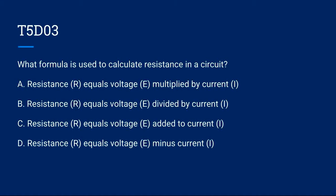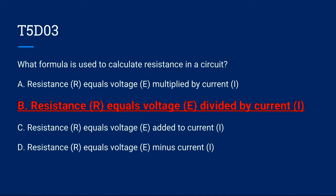T5D03: What is the formula used to calculate resistance in a circuit? A. Resistance equals voltage multiplied by current, B. Resistance equals voltage divided by current, C. Resistance equals voltage added to current, or D. Resistance equals voltage minus current. Correct answer is B. Resistance equals voltage divided by current.